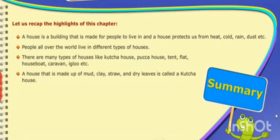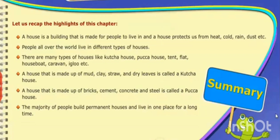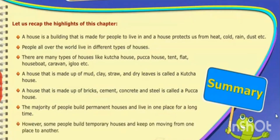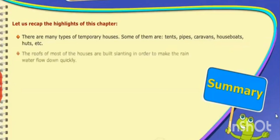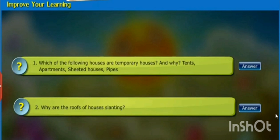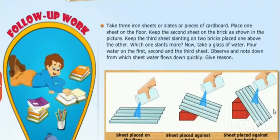Let us recap some highlights of this video. We have learned about permanent houses and temporary houses. Temporary houses are made up of clay and straw, and the roofs of these houses are not so strong. Permanent houses are made up of concrete objects like cement, bricks, etc., and they are called pakka houses.